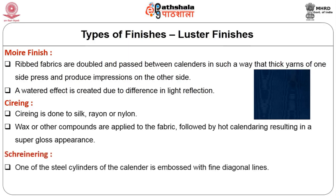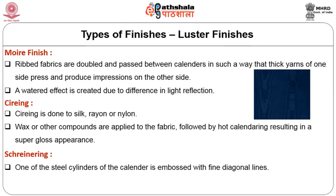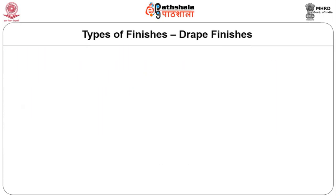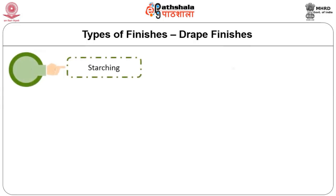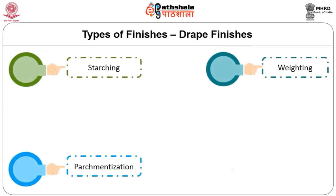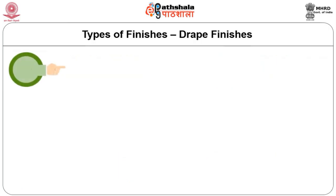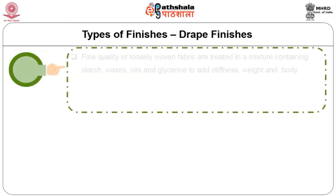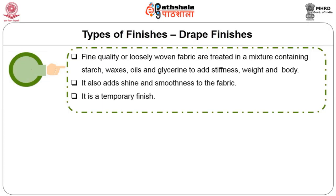In schreinering, one steel cylinder of the calendar is embossed with fine diagonal lines, producing smooth fabrics with soft lustre. Drape finishes include starching, weighting, parchmentization and burnt out finish. Starching (stiffening finish): fine quality or loosely woven fabrics are treated in a mixture containing starch, waxes, oils and glycerin to add stiffness, weight and body. It also adds shine and smoothness to the fabric. It is a temporary finish.